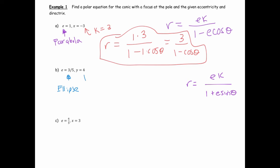This tells me that k is 4. So my equation would be r equals e, which is 3/5, times k, which is 4, divided by 1 plus e, which is again 3/5, sine theta.